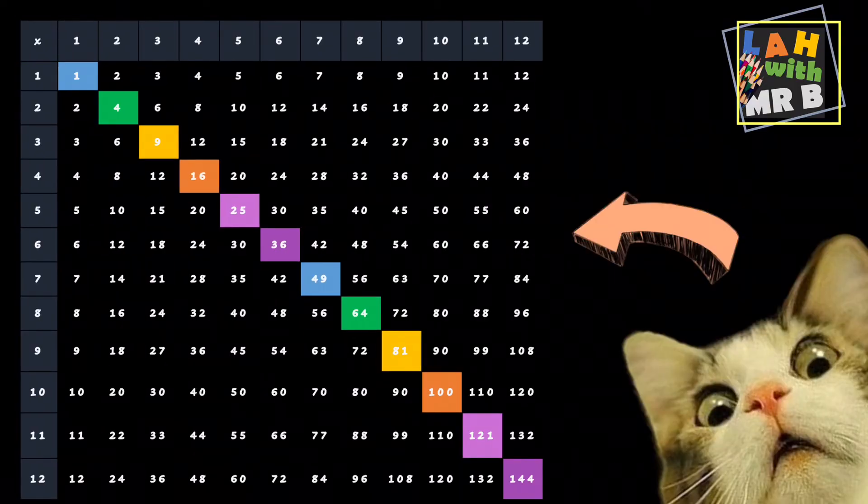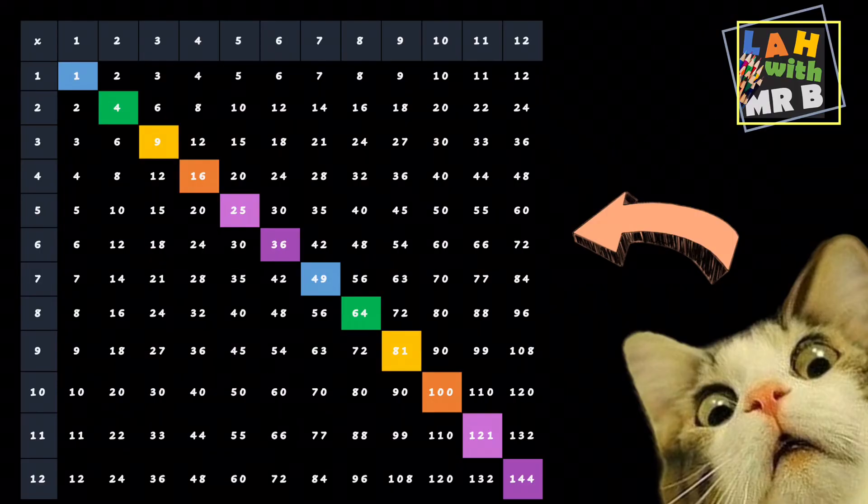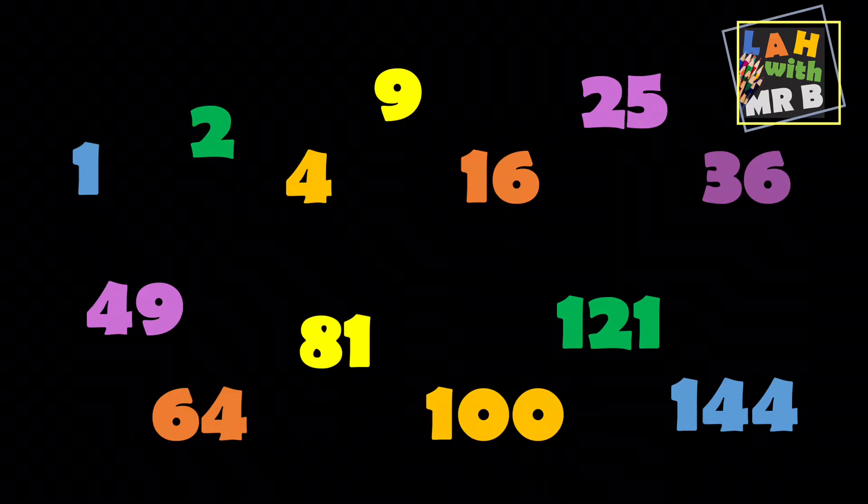Have a look at what happens when you color them in on a multiplication grid. It's a pretty interesting pattern isn't it? Anyways now that you know what squared numbers actually are, here are the first 12 square numbers: